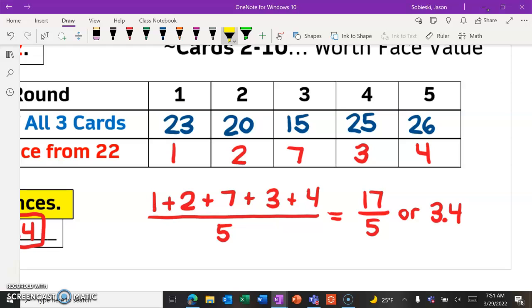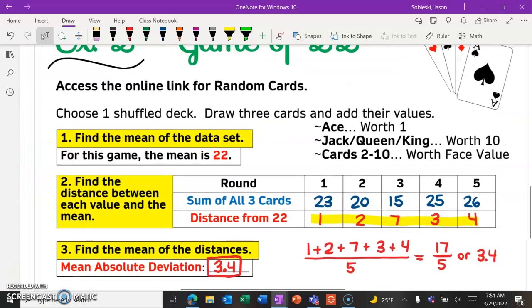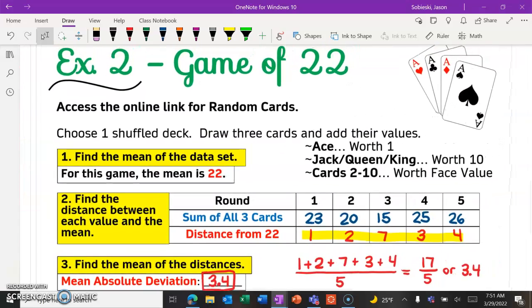Those are the distances that each of those numbers are from 22, the name of the game. And then you just take the average of those five numbers to get your mean absolute deviation. So this will be one that you can finish off on your own, and make sure you get your example done.